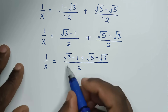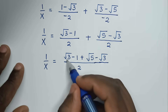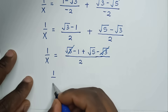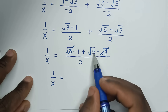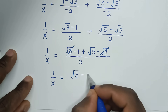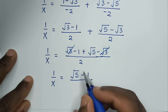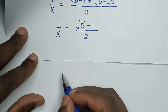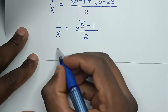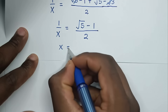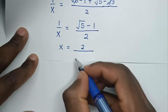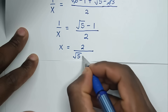The square root of 3 terms cancel each other out, so 1 over x equals square root of 5 minus 1, over 2. Then to find x, we take the reciprocal, so x is equal to 2 over square root of 5 minus 1.